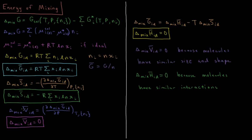The ideal molar volume change of mixing is the partial derivative of the molar Gibbs energy of mixing with respect to pressure. Since mole fractions, temperature, and the gas constant are all independent of pressure, there is no molar volume change during ideal mixing. This is why solutions behave more ideally when the size and shape of their particles are approximately equal — similar-sized particles pack together the same way in the mixture, so the molar volume does not change upon mixing.